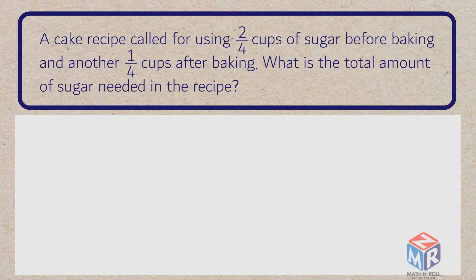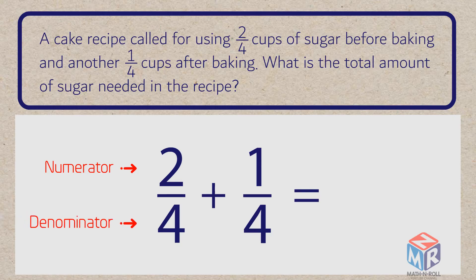To solve this problem, we need to write an equation. 2 fourths plus 1 fourth. The numerators are 2 and 1. These fractions have the same denominator. It's 4.